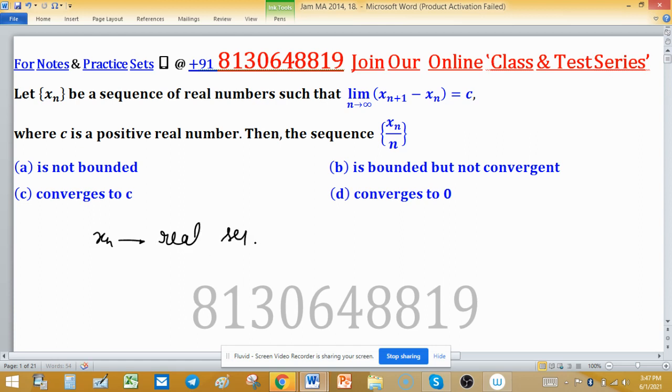Also, the limit of XN plus 1 minus XN is equal to C. You can choose any value of C, either 2, 3, 4, or 5, where C is a positive real number. Then we need to analyze the sequence XN upon N.